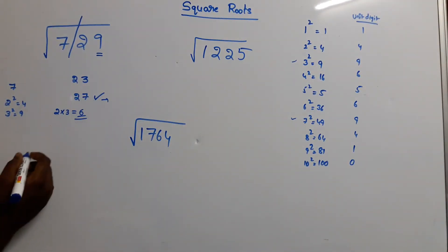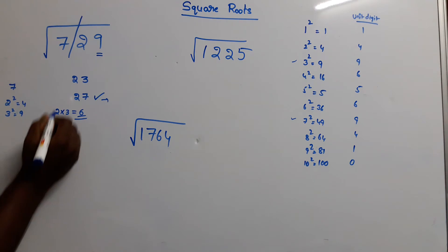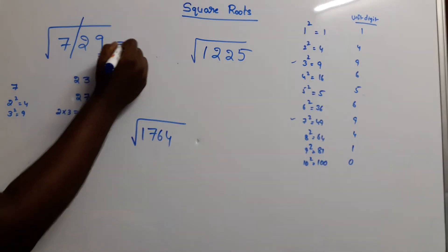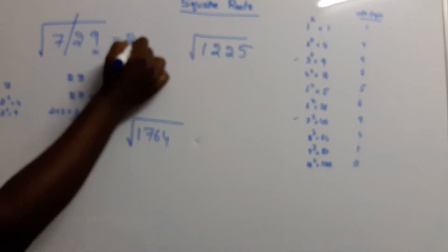So, if you want to find the number: 4 square — 729 square root is 27.